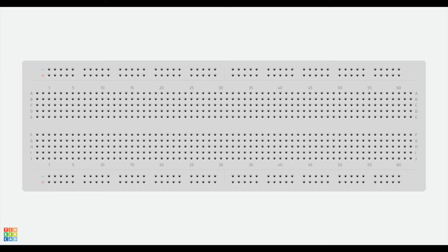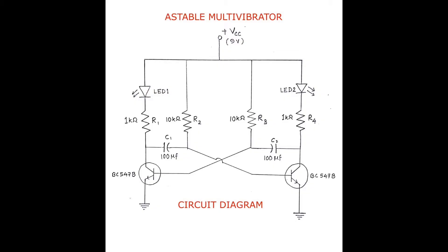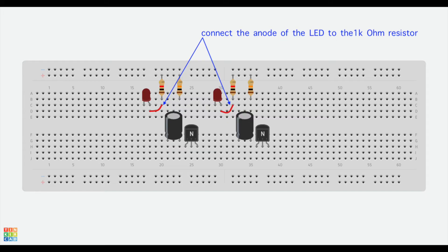Take a breadboard and place the components according to the schematic diagram. Now connect the anode of the LEDs to the 1kΩ resistors.